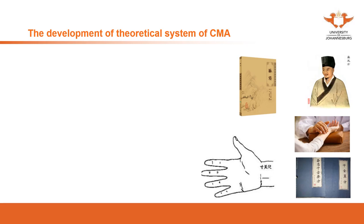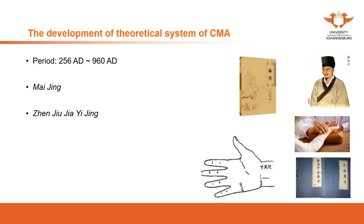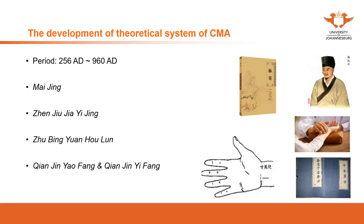These four classics symbolize the establishment of the theoretical system of Chinese medicine. After the period of these four classics, all developments in Chinese medicine were based on them. As we focus on acupuncture, we will introduce some of the key improvements and books, though these have already been introduced in the history portion and will not be discussed in detail again.